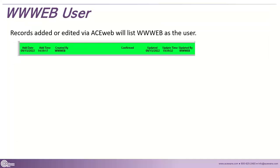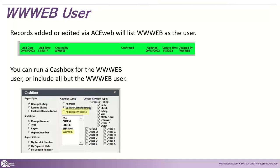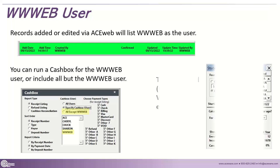There is also the WWWeb user. This is the user that lets you know that someone registered online — 'Created by the Web.' You've probably also seen things like 'Created by Web, Updated by Lindsay,' where someone registered online and then a staff member did something with that record. You can also run the Cashbox report for the web user or include everyone but the web user, so you can see how much has come in by payment type — by the web or not by the web.